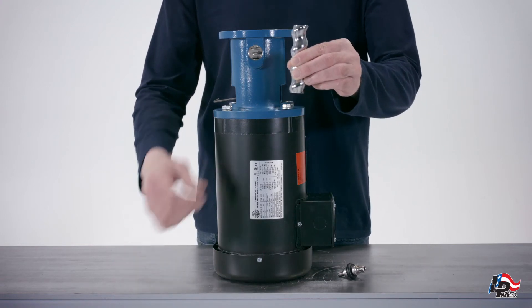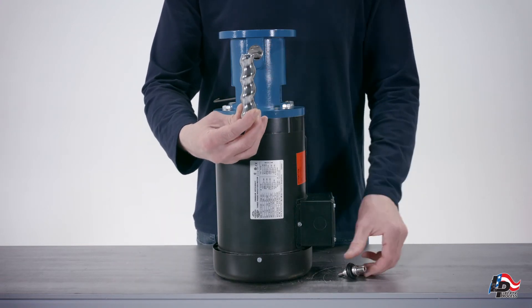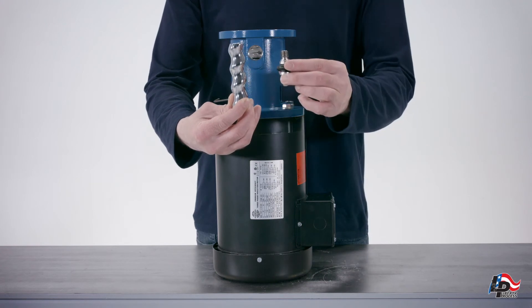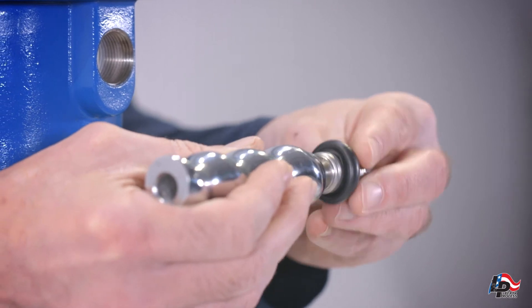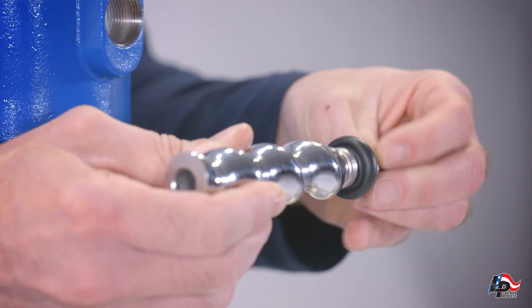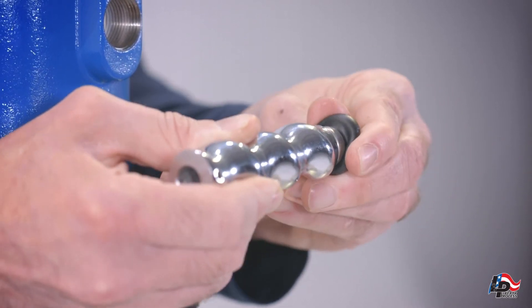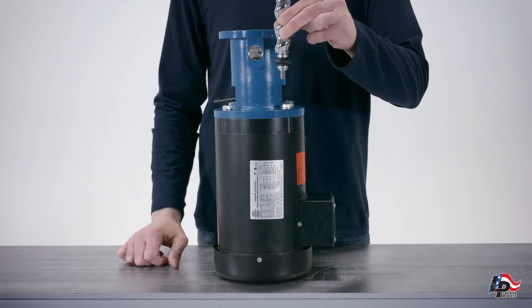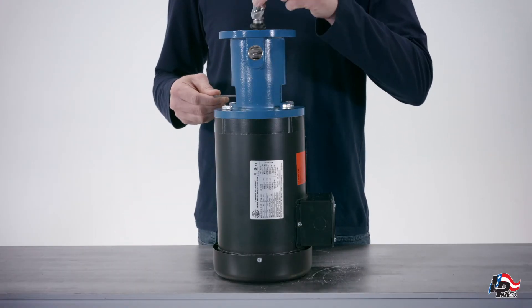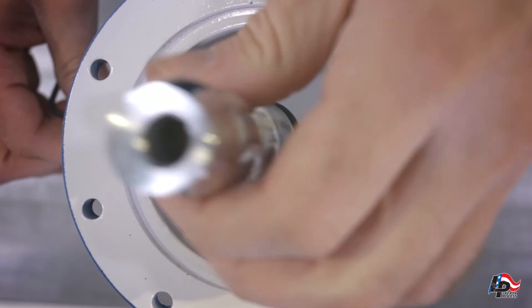Thread the flex joint into the rotor. Place the 7-64-inch hex key into the hex nut on the stub shaft to hold it in place. You may now thread the flex joint and rotor into the stub shaft.